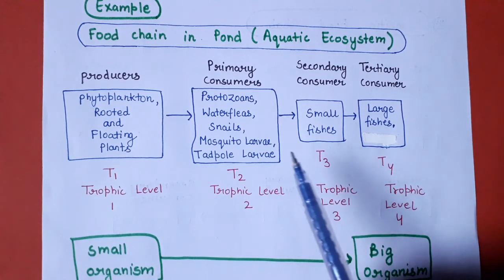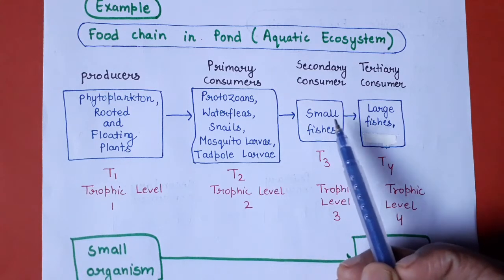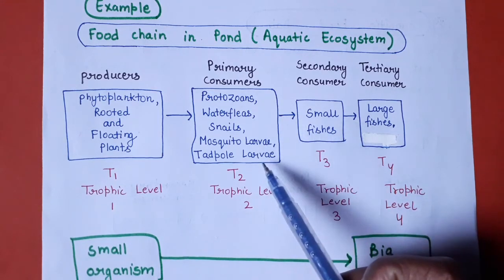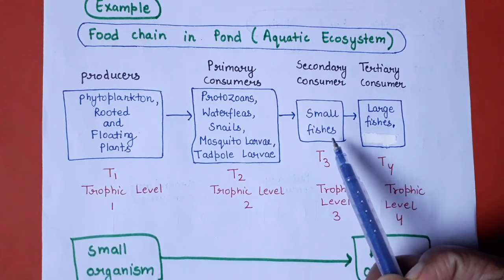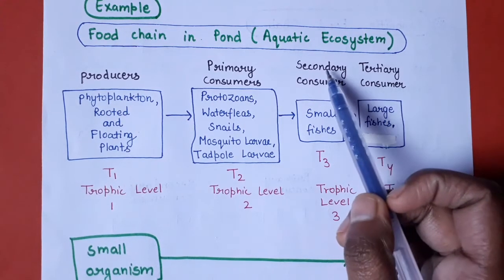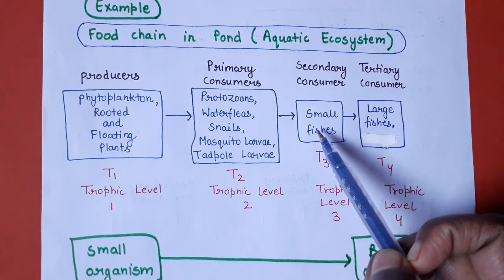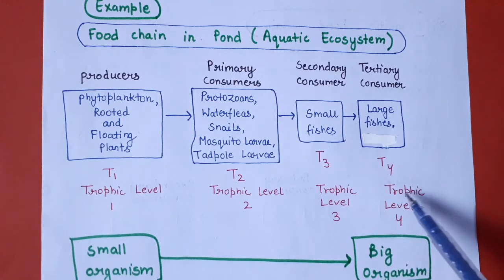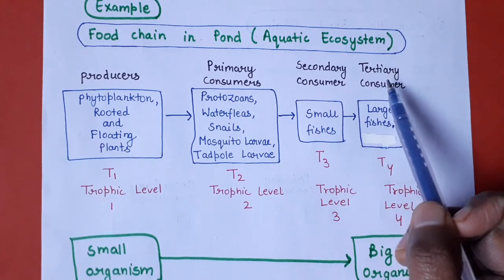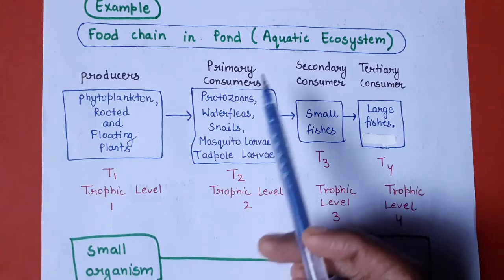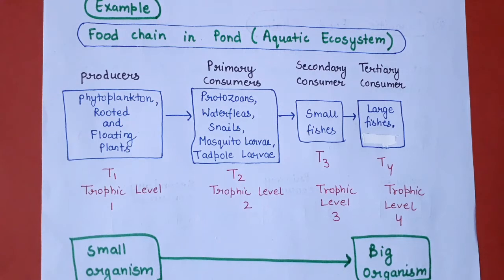Trophic level 2 ke organisms par small fishes feed karti hain — mosquito larvae aur tadpole larvae par chhoti fishes feed karti hain — aur ye trophic level 3 mein aati hain; ye secondary consumers hain. Iske baad jo large fishes hoti hain woh small fishes par feed karti hain aur yahan trophic level 4 hai — highest trophic level — aur ye tertiary consumers hain. Is tarike se grazing food chain aquatic ecosystem mein chalti hai, energy ka transfer small organism se big organism ki taraf hota hai.